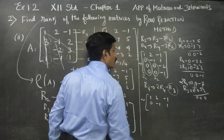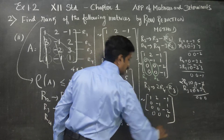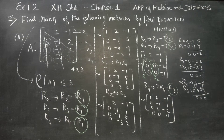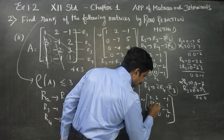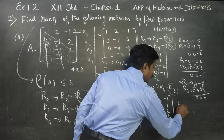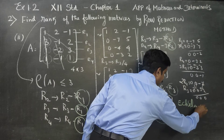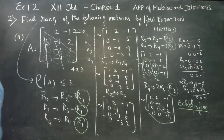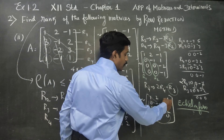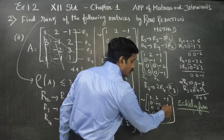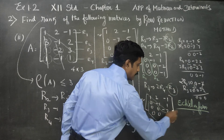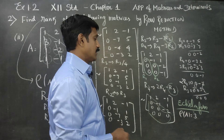Therefore my answer will be: 1, 2, minus 1; 0, minus 1, 1; 0, 0, minus 2; 0, 0, 0. Final stage — now I'm going to give my answer. This is the echelon form. The principle diagonal is all elements above zero. Rank of A is equal to 3.